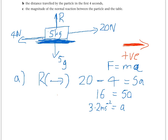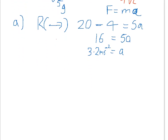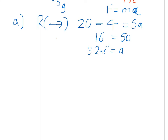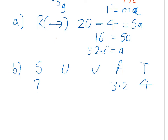Part A completed. Part B says find the distance travelled by the particle in the first 4 seconds. Because it says distance and time, we're going to use the SUVAT equations from Chapter 2. We just found the acceleration in Part A, which was 3.2. We're trying to find the distance S, and we know the time is 4. We need to know one of the other two things — either U or V. We can assume the particle started from rest, so initial speed U is 0. That means we don't use V, so we need a SUVAT equation that doesn't include V.